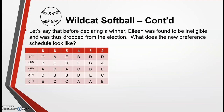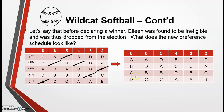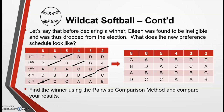Now let's say that before the election happened, Eileen was found to be ineligible and was dropped. What does the new preference schedule look like? This is the same concept as plurality with elimination — we eliminate one candidate and combine any columns now ranked the same. In this case, no columns are ranked the same, so we don't need to combine any. We can simplify by removing the E column. Now let's find the new winner using the pairwise comparison method and compare it to the original winner.